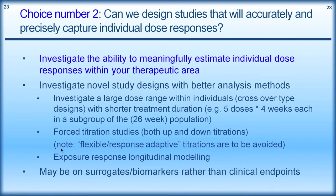We can also think about forced titration studies — patients starting at a low dose and being ramped up every 4 weeks, or starting at a high dose and coming down. The important thing is to understand the longitudinal effect of the response versus the effect of the dose and separate those two parts. I'm really not a fan of flexible or response-adaptive titrations, where individuals start at a low dose and if not achieving a particular response, are titrated upwards. In terms of generating useful data, patients who go on to higher doses are the hardest to treat — they're self-selecting, and that creates problems for subsequent modelling.